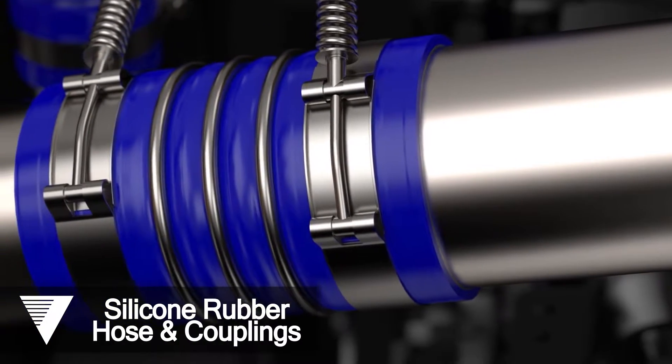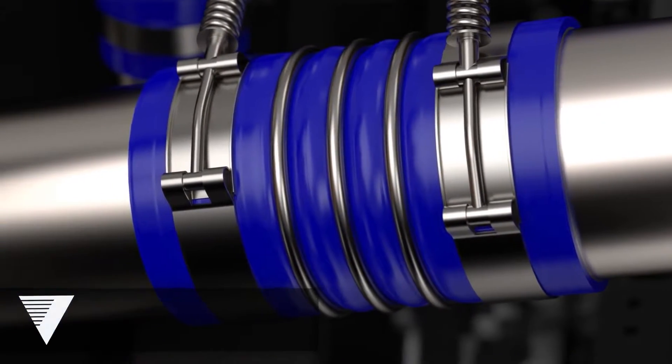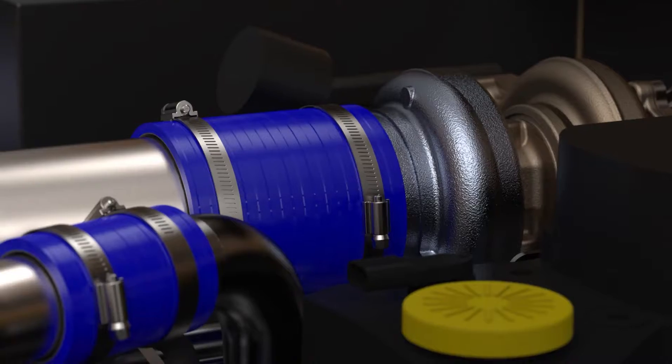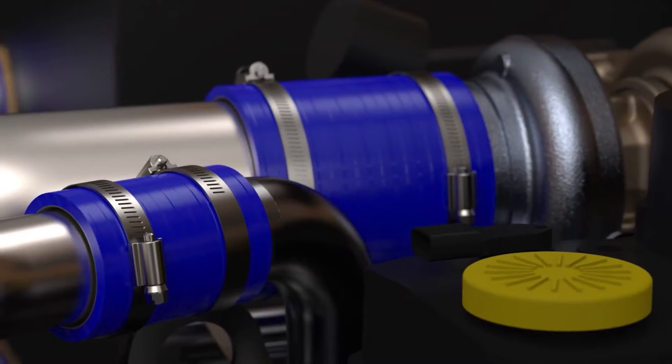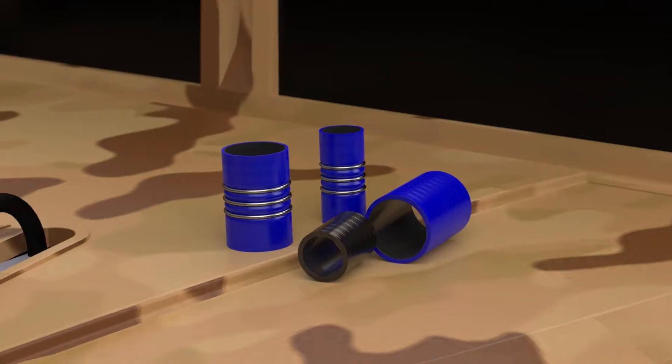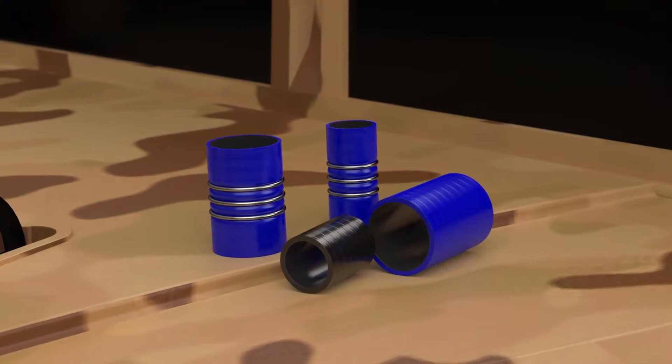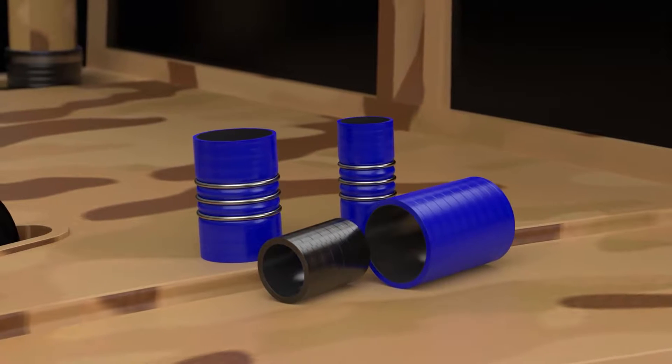Our silicone rubber hoses have proven to be reliable, even under the most extreme conditions, designed for operating temperatures ranging from 390 degrees Fahrenheit on standard silicone products to 480 degrees Fahrenheit on fluorosilicone products.